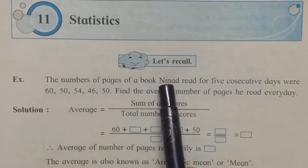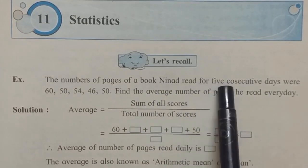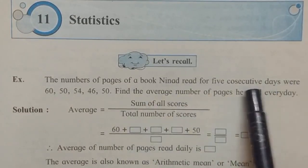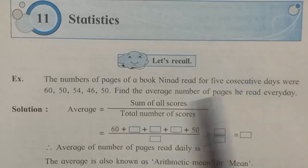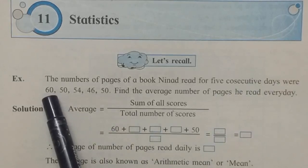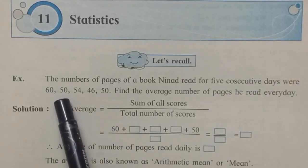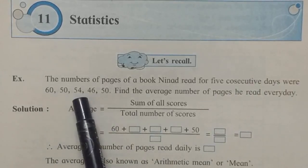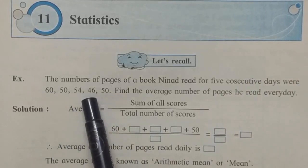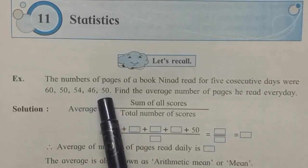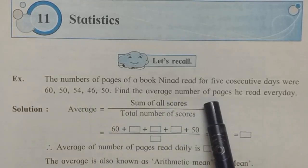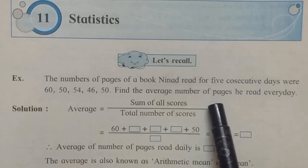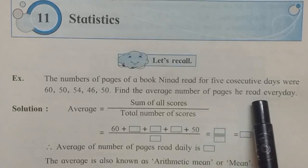In this example, Ninad has read every day a certain number of pages. Consecutive days means continuous days, without any gap. So first day he read 60 pages, then 50, then 54, then 46 pages, then 50 pages. The question asks us to find the average number of pages read daily.